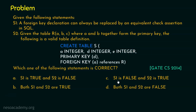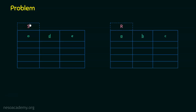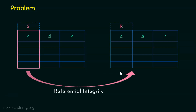Since Statement 1 is false, the answer is either option C or D. Now let's examine Statement 2. Relation S has a primary key D, and relation R has a composite primary key consisting of A and B together. The value inserted into column A of S is supposed to have a referential integrity constraint referencing the parent table R. However, A alone is not a candidate key or a unique attribute in relation R.